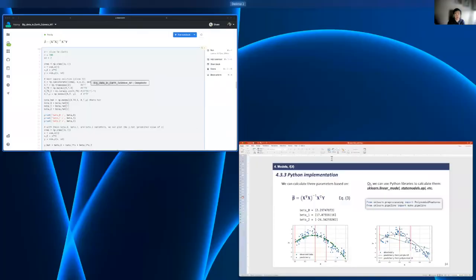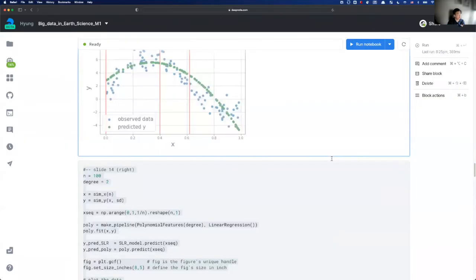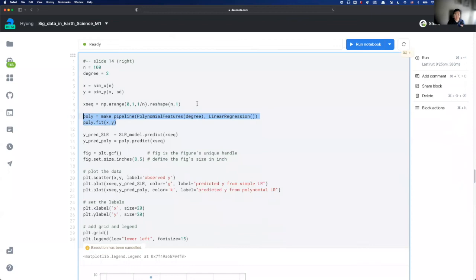So let's check the code block. This code block shows how we can use the Python package to find the best least squares solution for three beta for the quadratic model.